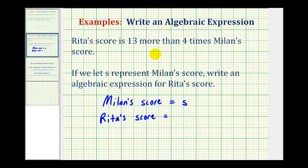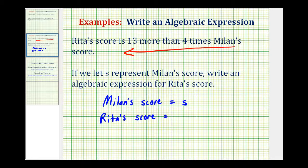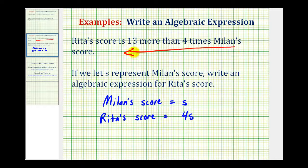To help us write this, it's often helpful to take a look at this in the reverse order, meaning we'll first deal with four times Milan's score, and then we'll deal with the thirteen more. Well, four times Milan's score, or four times s, would just be four s. So four s represents four times Milan's score, but we want thirteen more than four times. So our expression for Rita's score is going to be four s plus thirteen.